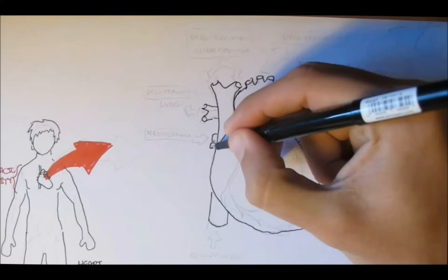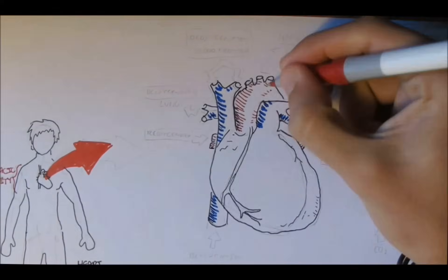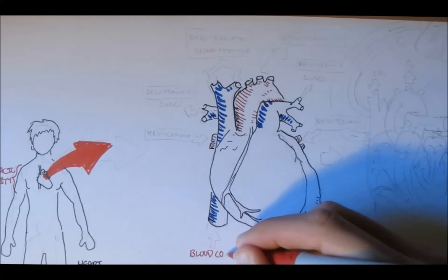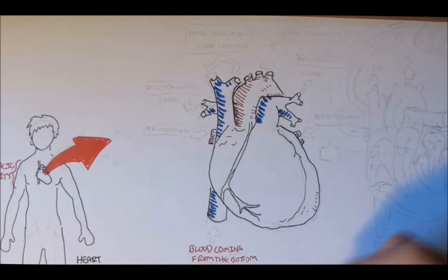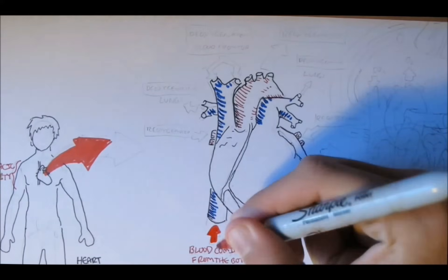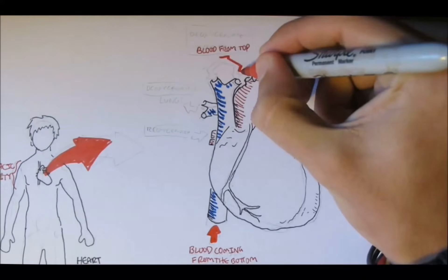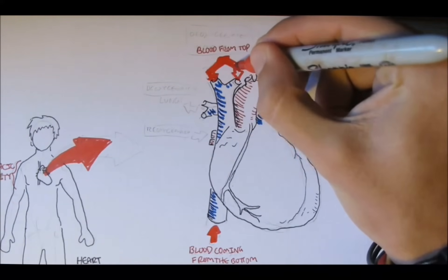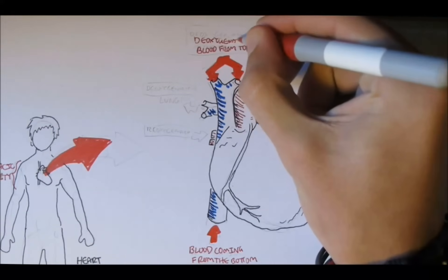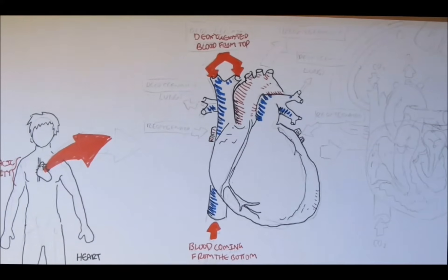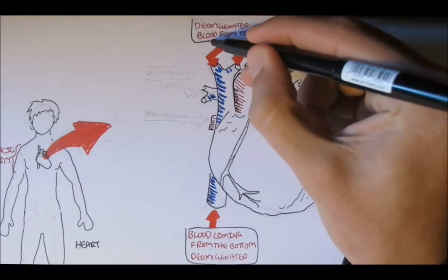The circulatory system or the cardiovascular system can be very confusing, but it's actually quite simple. Basically, what happens is that de-oxygenated blood — or blood with oxygen that has been used up by the body — will come back from down here and from up here, known as the superior and inferior vena cava, and we will learn these names later on.